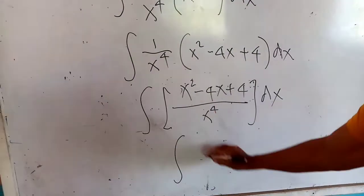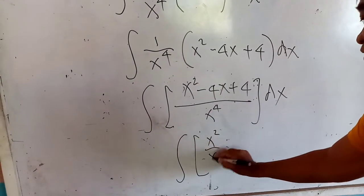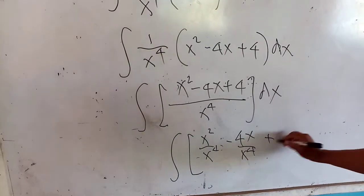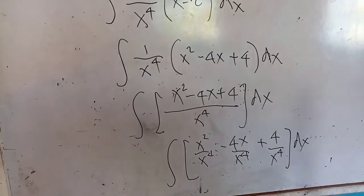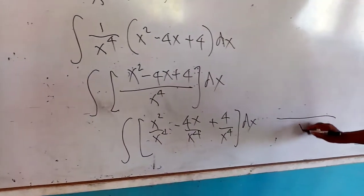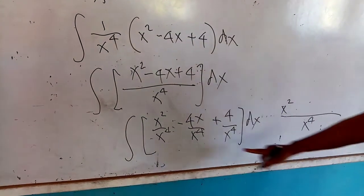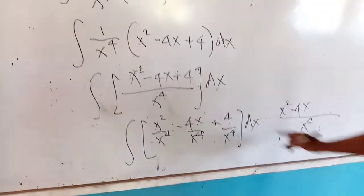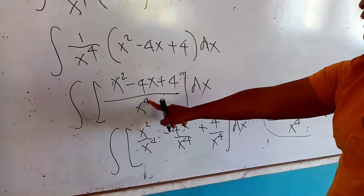What is the distributive law? That would be: x squared divided by x to the 4, minus 4x all over x to the 4, plus 4 all over x to the 4, bracket times the differential dx. Because if you do the reverse to check your answer — you have x to the 4, you divide and multiply — that would give back x to the 4, verifying these parts are the same.